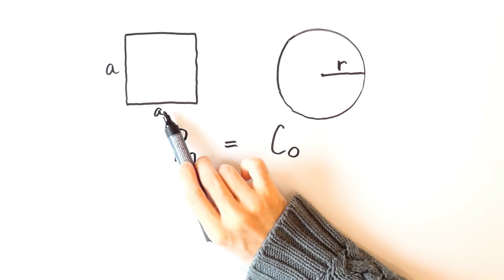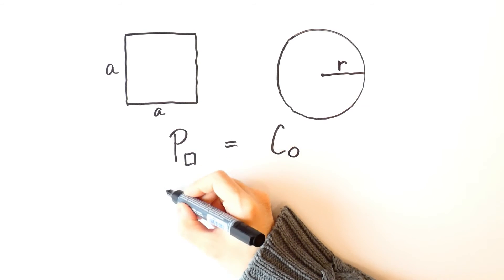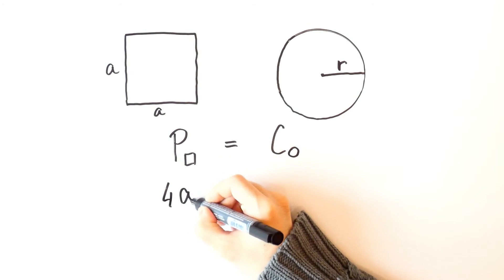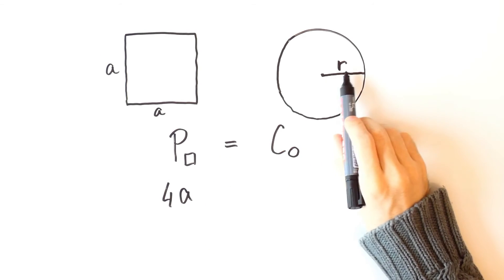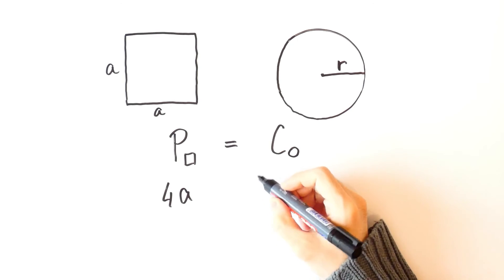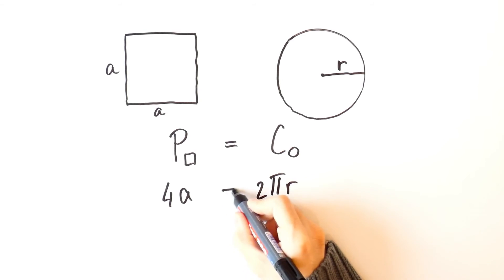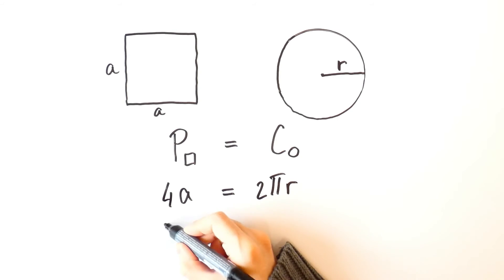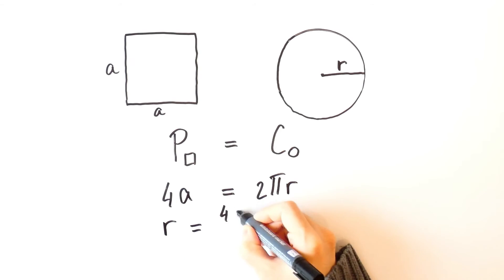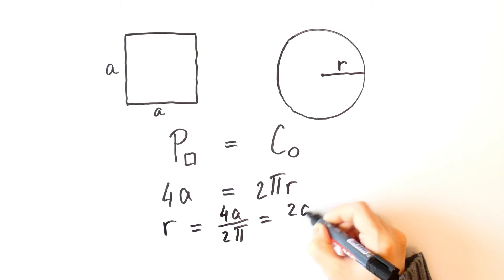Well, since a is the side of the square, then the perimeter of the square is equal to 4 times a, and since r is the radius of the circle, then the circumference of the circle is equal to 2 pi r, which means that the radius of the circle is equal to 4 times a over 2 pi. And that is equal to 2a over pi.